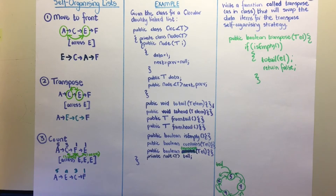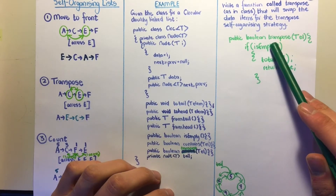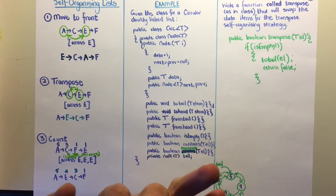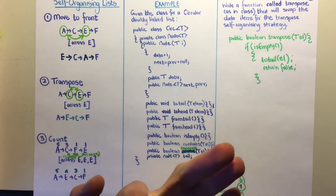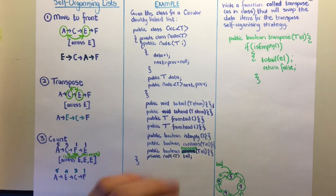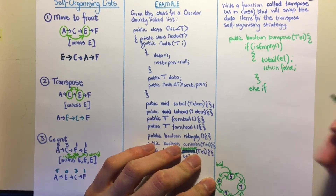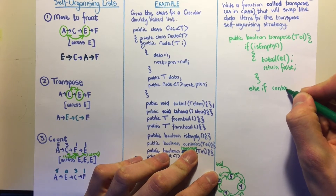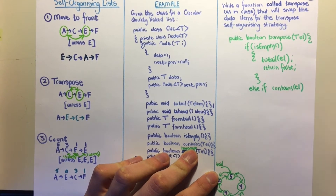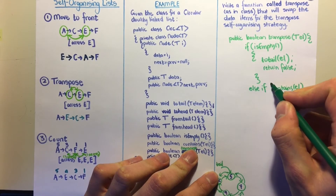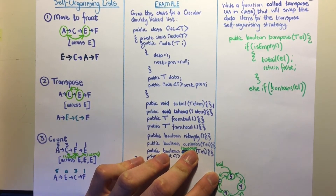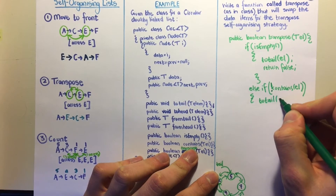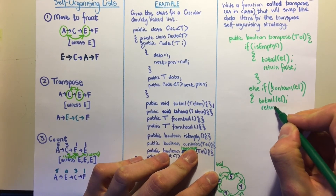Next, we handle the case where the list is not empty but the element is not in the list. Using the contains method with a logical NOT, if the element is not contained in the list, we add it to the tail and also return false.